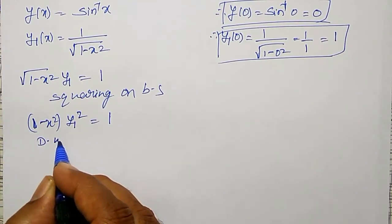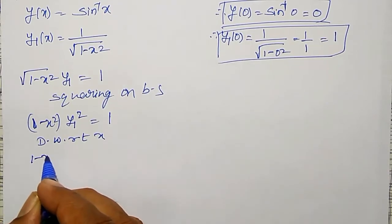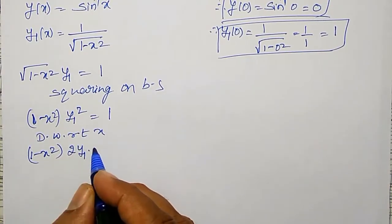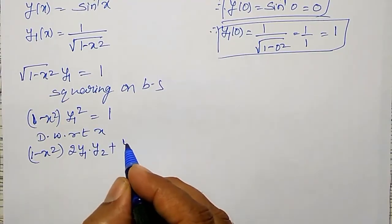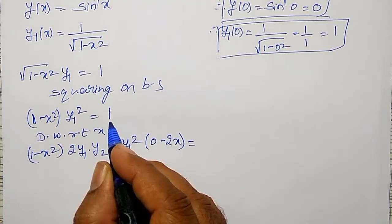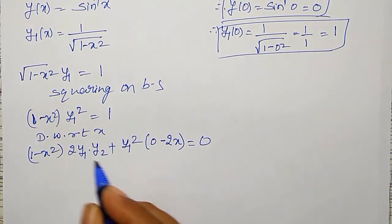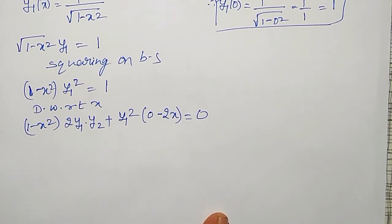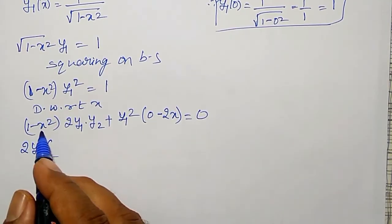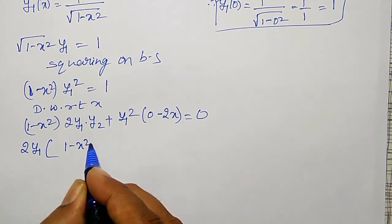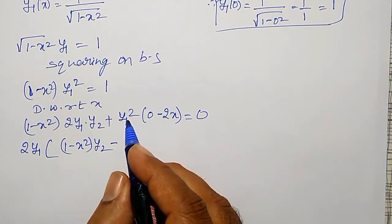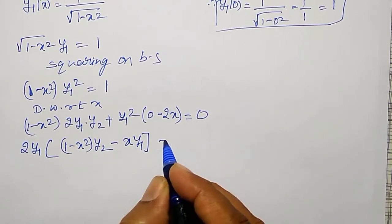Differentiating (1 − x²)·y₁² = 1 with respect to x using the product rule: (1 − x²)·2y₁·y₂ + y₁²·(−2x) = 0. Taking 2y₁ as common factor, this simplifies to: (1 − x²)·y₂ − x·y₁ = 0.